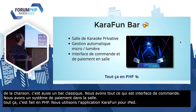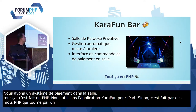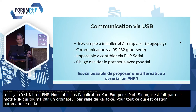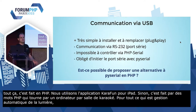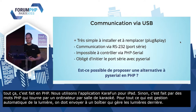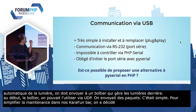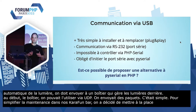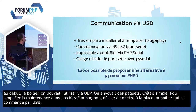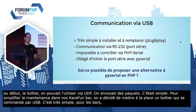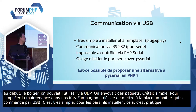Pour tout ce qui est gestion automatique de la lumière, on doit envoyer des données à un boîtier qui va gérer nos lumières. Au début, notre boîtier on pouvait l'utiliser via UDP, donc on envoyait des paquets, c'était assez simple. Pour simplifier la maintenance dans nos Carafun Bars, on a décidé de mettre à la place un boîtier qui se commande par USB. L'USB c'est très simple à installer et à remplacer, donc pour les bars c'est extrêmement pratique. Par contre, nous on a tout fait en PHP, et communiquer vers de l'USB en PHP, ce n'est pas très pratique.